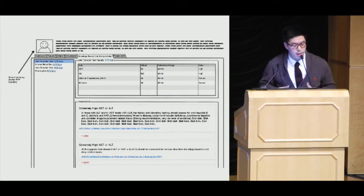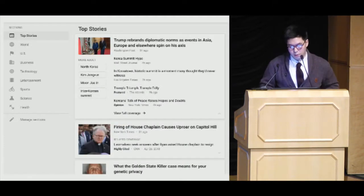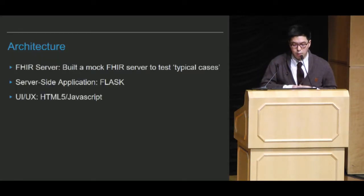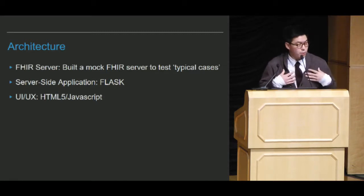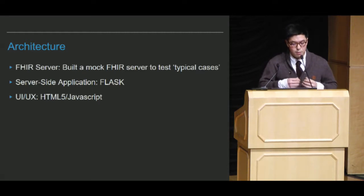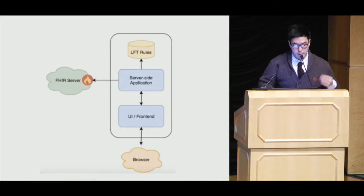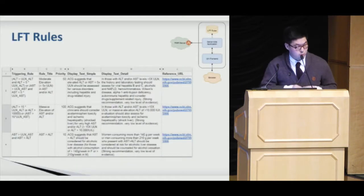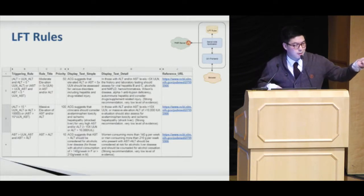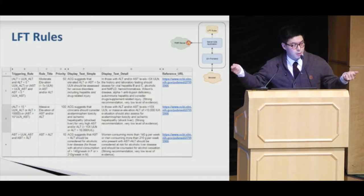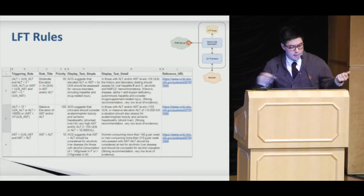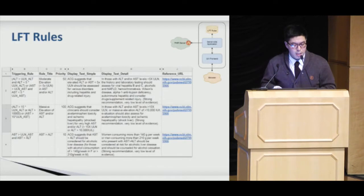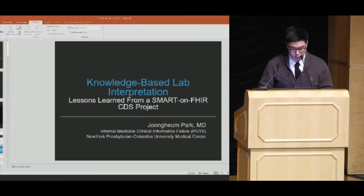When communicating with the development team, I came up with a mock-up interface for the app. The architecture: we built a mock FHIR server to test cases because we didn't have access to any clinical FHIR servers. The server-side application was built on Flask with Python. Interface elements were built on HTML5 and JavaScript. The server-side application accesses liver function test rules from Excel sheets given to the clinicians — they just type the triggering rules and what knowledge element should pop up when certain triggers are met. For instance, if AST is higher than ALT, the ACG guidelines suggest considering alcoholic liver disease, with a reference URL.